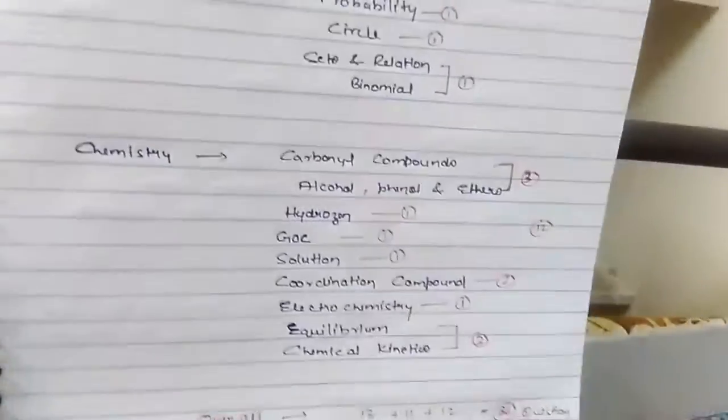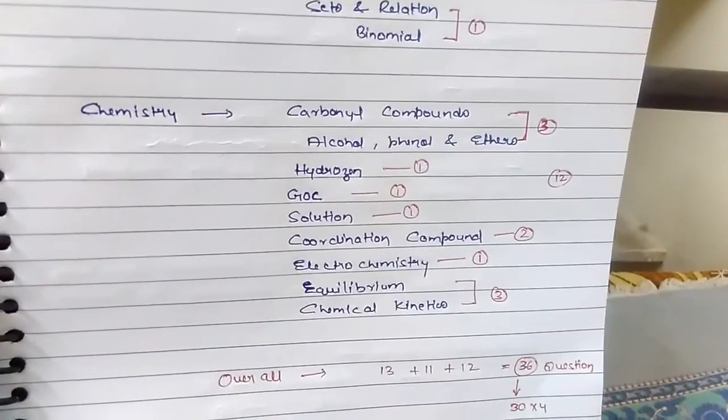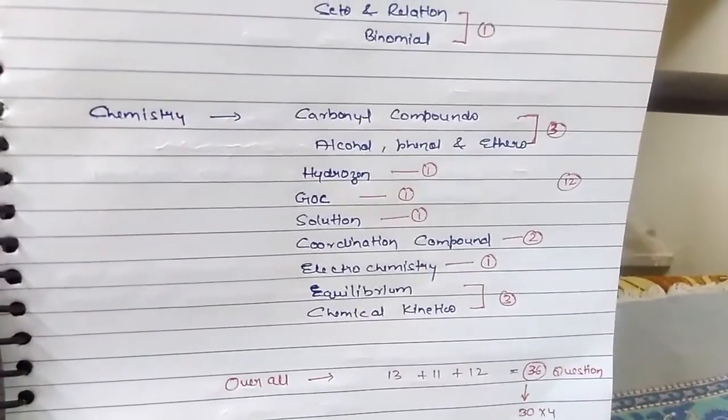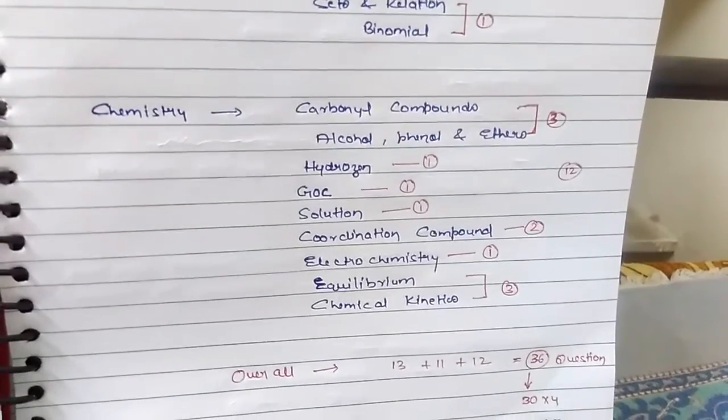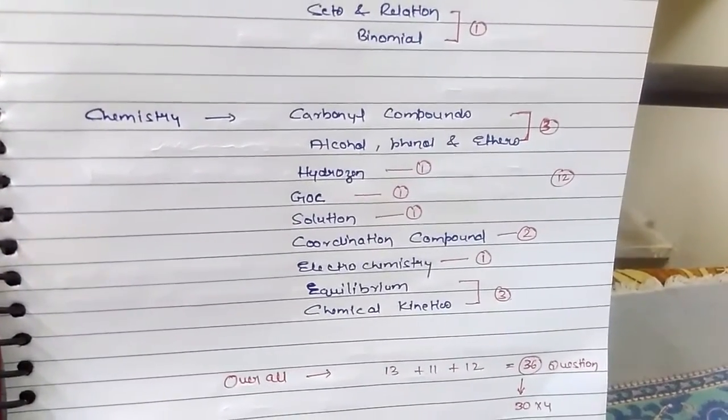Chemistry: carbonyl compounds, alcohol, phenol and ethers combinedly form 3 questions. Hydrogen, GOC, solution 1 question, coordination compound, electrochemistry, equilibrium, chemical kinetics 3 questions. Total 12 questions.